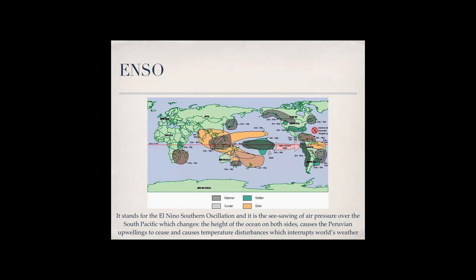ENSO stands for the El Niño Southern Oscillation and it is a seesaw of air pressure over the South Pacific which changes the following things: the height of the ocean on both sides, it causes Peruvian upwellings to cease, and causes temperature disturbances which interrupts the world's weather. So if there are two sides of the Pacific Ocean, usually the left side near Asia is really high.